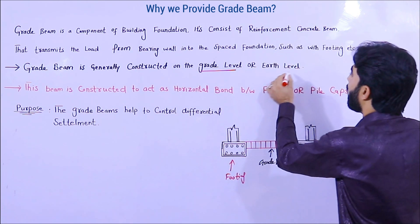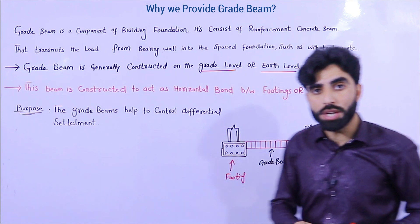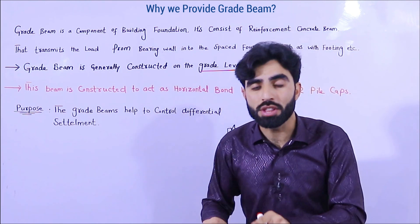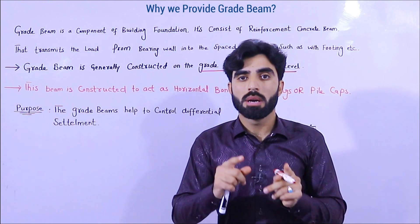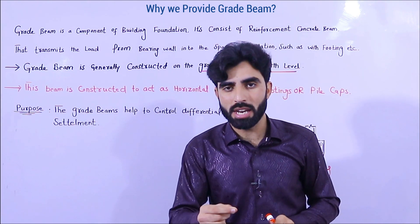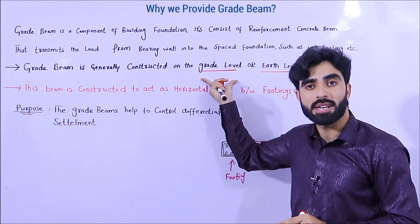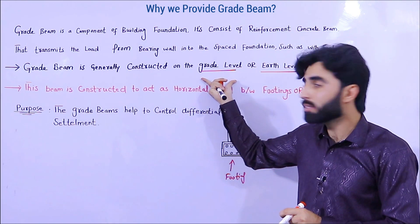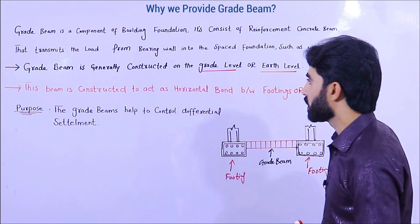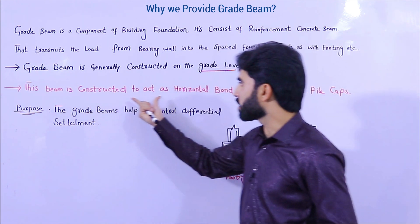It is called grade beam because we construct it at the grade level, which is the earth level. When we construct a beam at the plinth level, that beam is called a plinth beam. This beam is called grade beam because it is provided at the grade level.